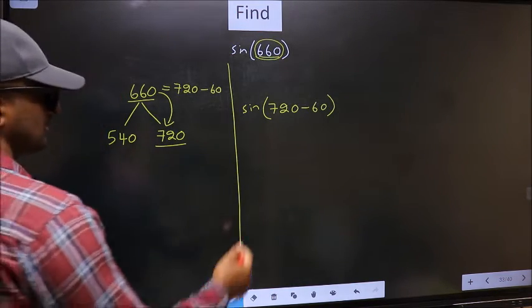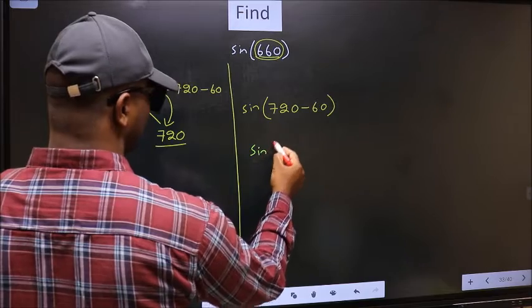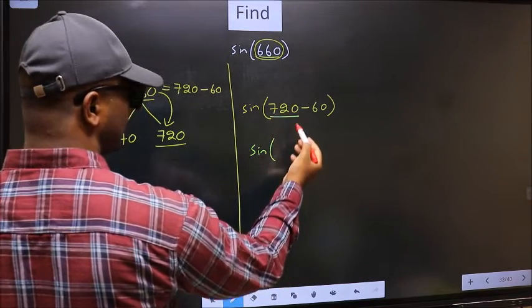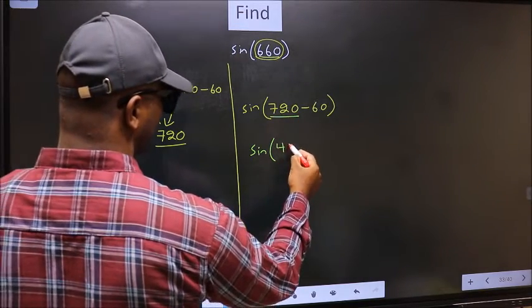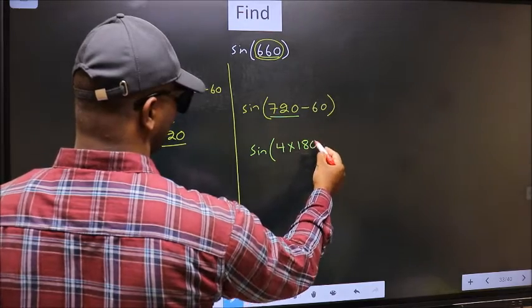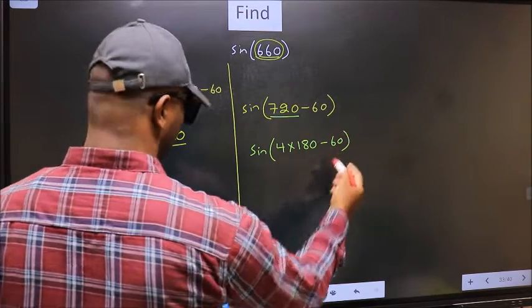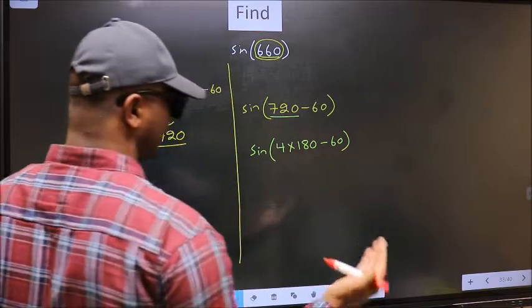Next. Sin. In place of 720, now we should write 4 into 180 minus 60.